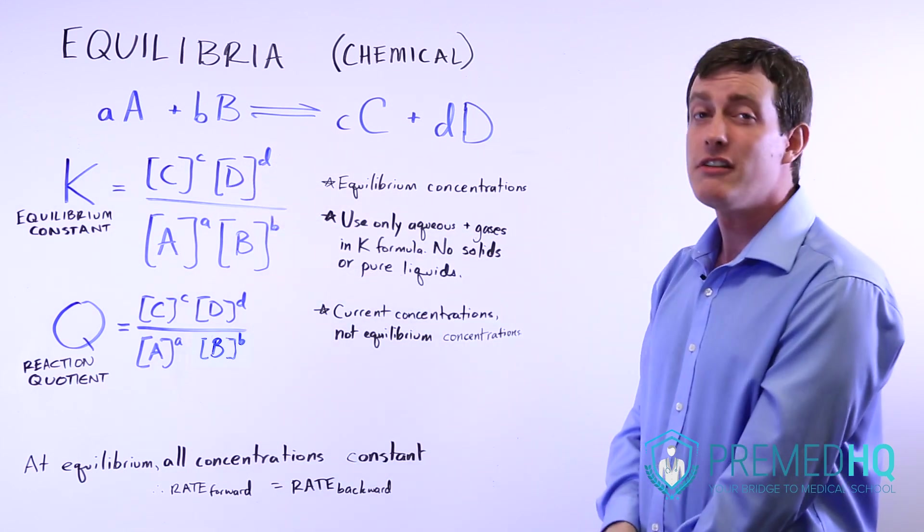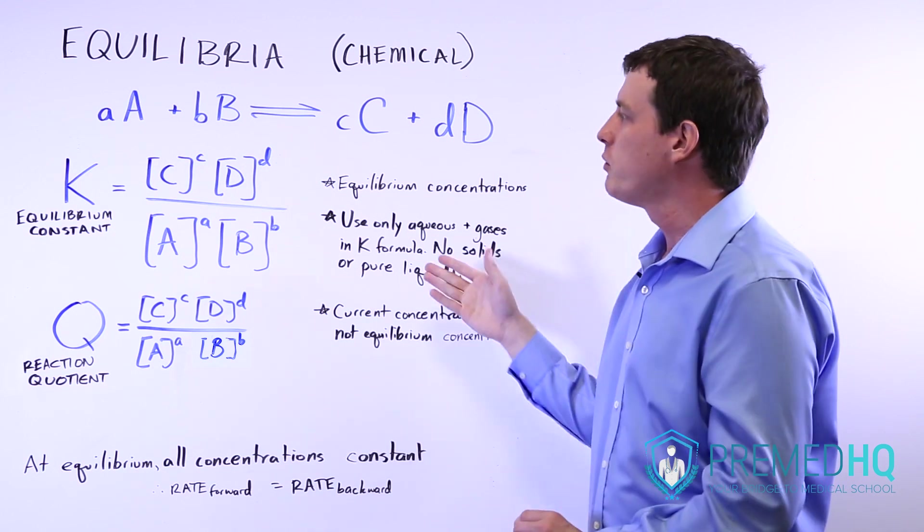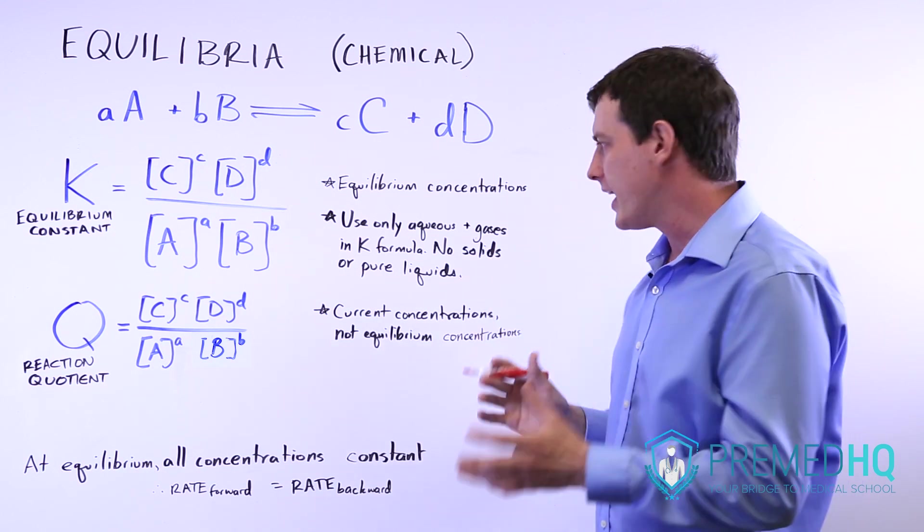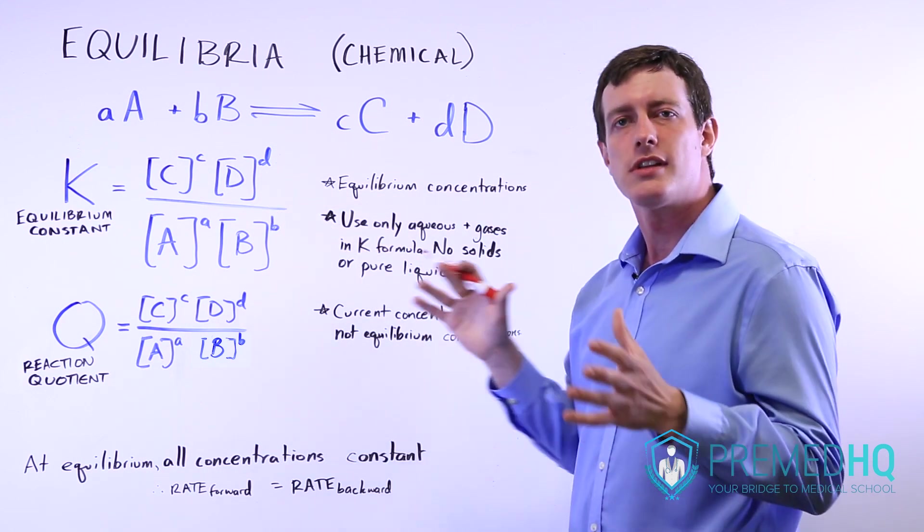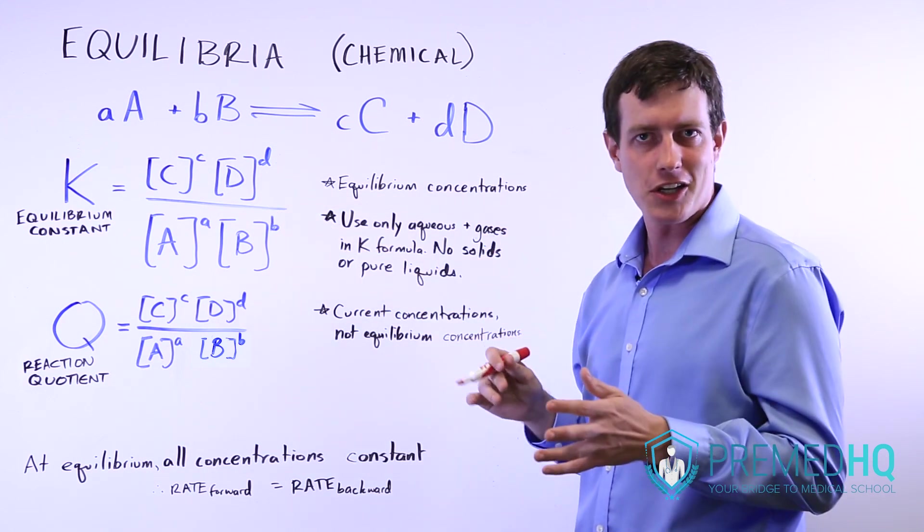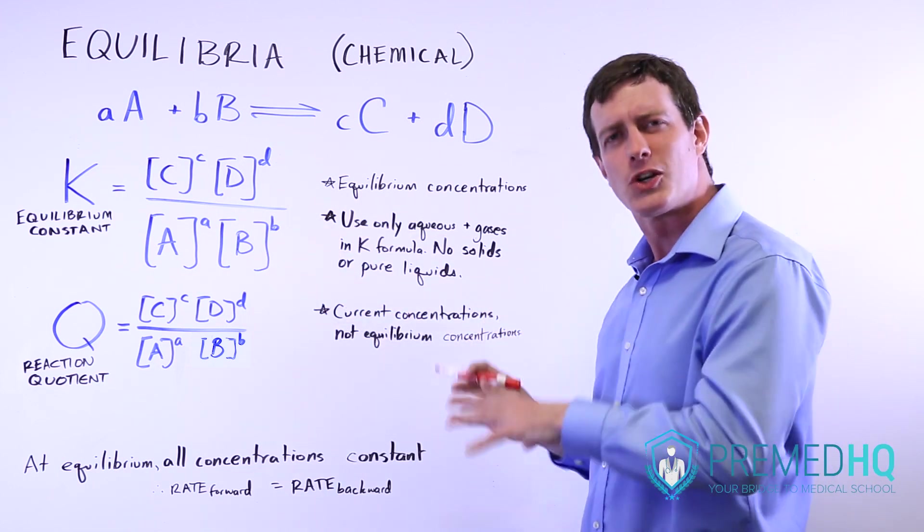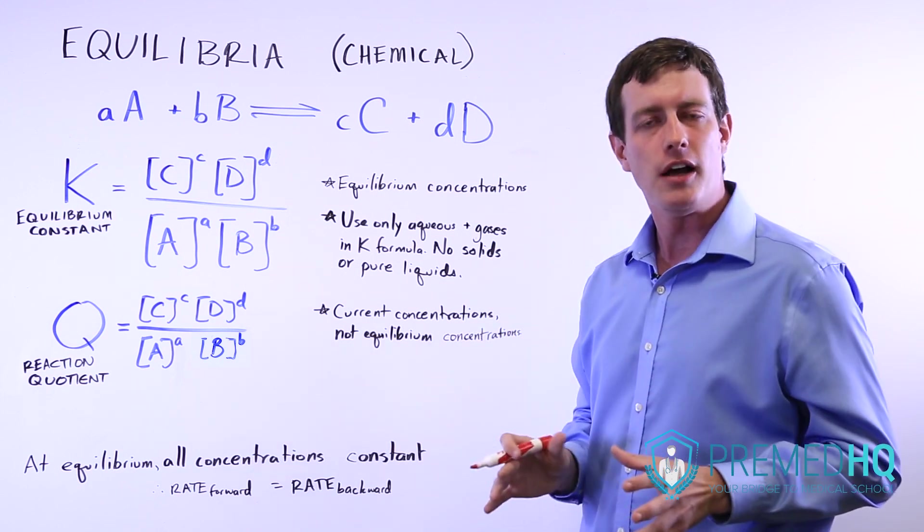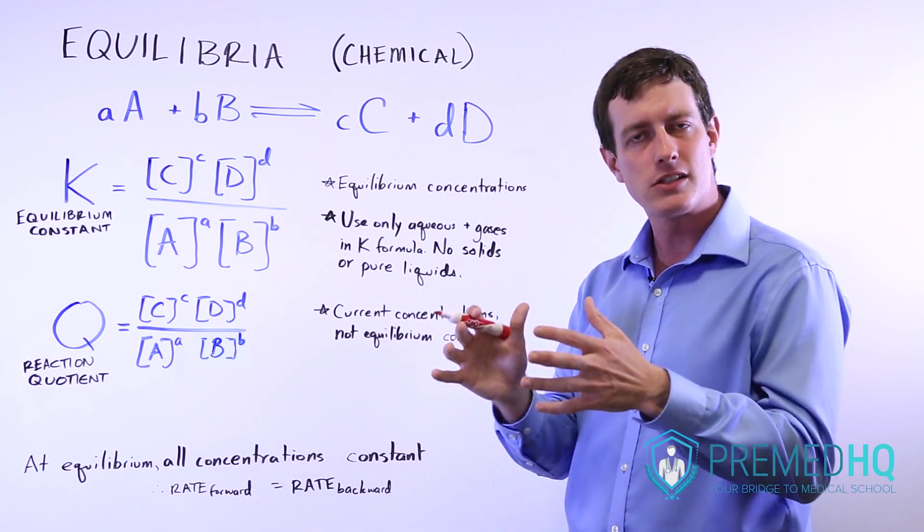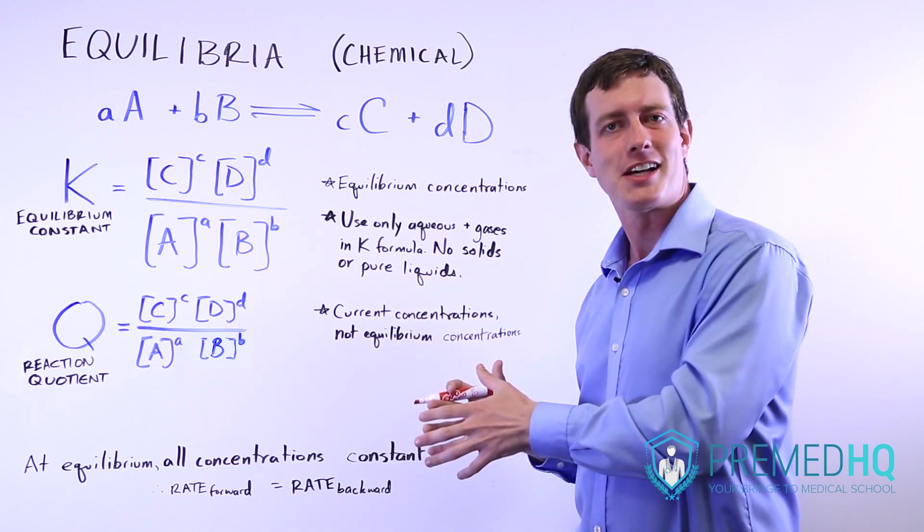And another very, very important distinction to make is that you only use aqueous solutes and gases in your K equation. And that's because those are the things that are always interacting with each other. Aqueous things will interact with all sorts of other species, and so will gases. But solids and pure liquids do not.